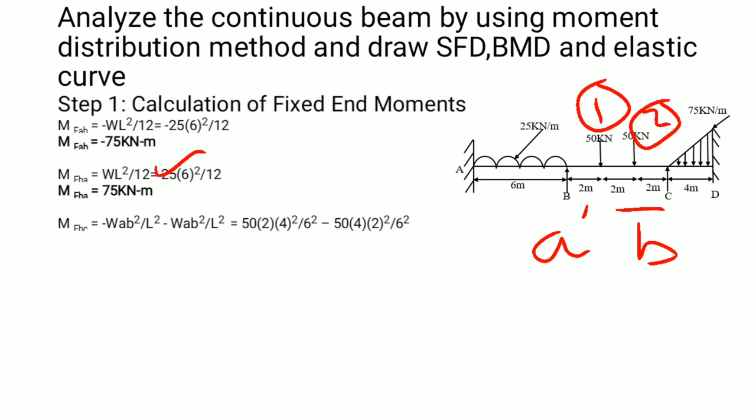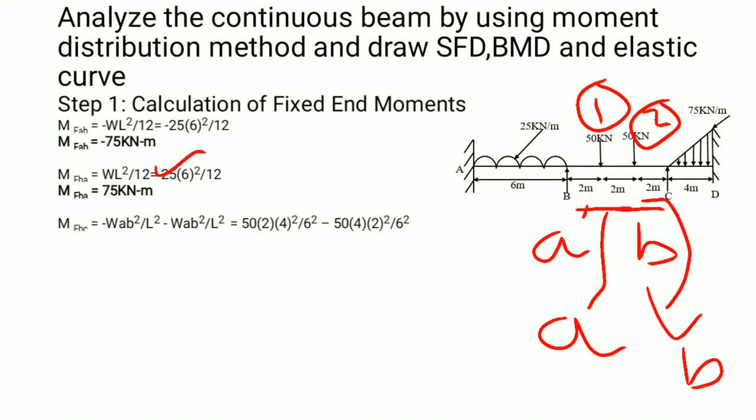For the second 50 kN load, the value of a = 4 m and b = 2 m. Using the same eccentric point load formula −wab²/L²: MF_BC (second load) = −50 × 4 × 2² / 6² = −50 × 4 × 4 / 36. Adding both contributions, the total fixed end moment MF_BC = −66.67 kN·m.